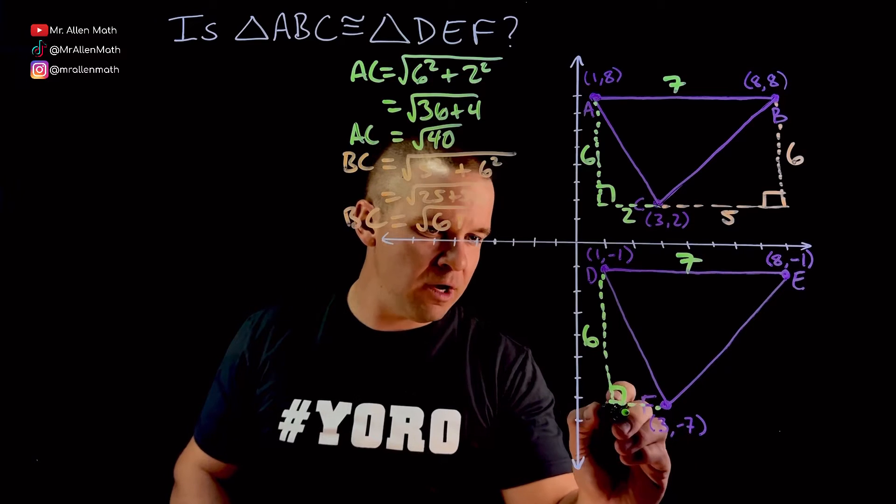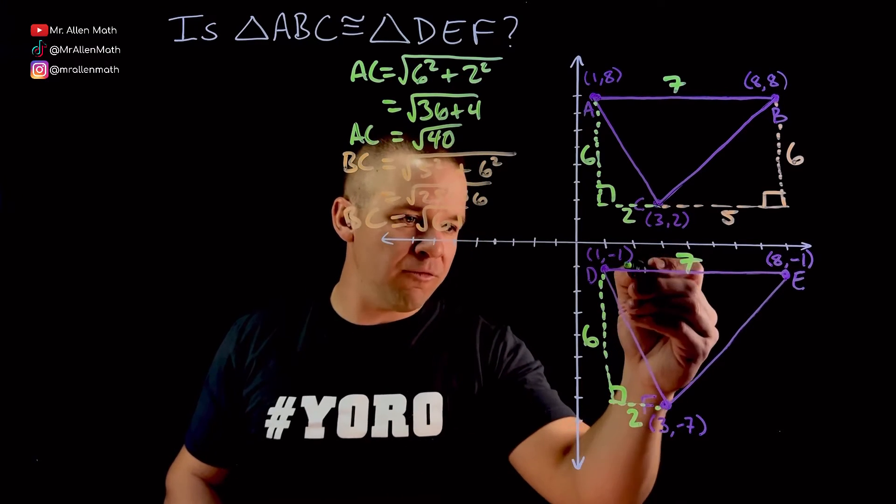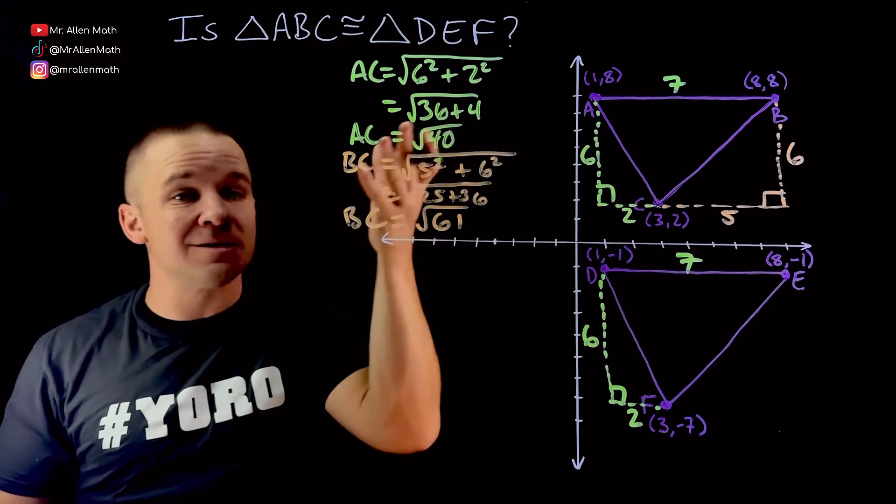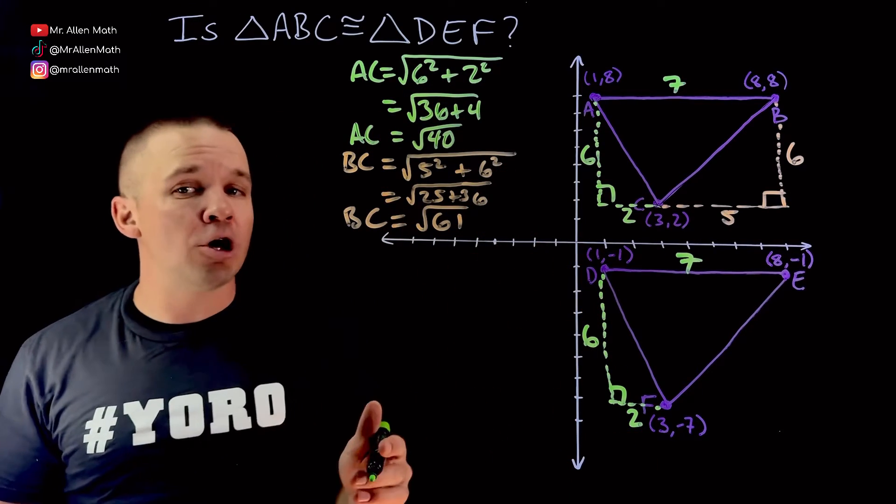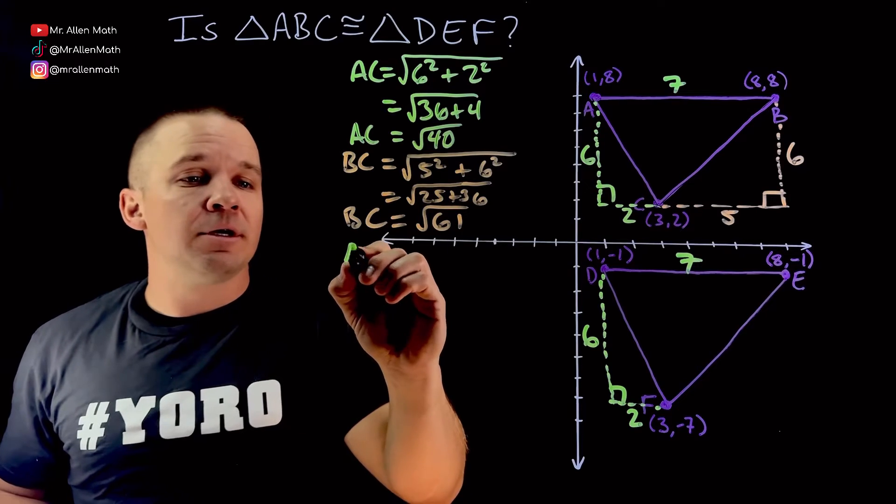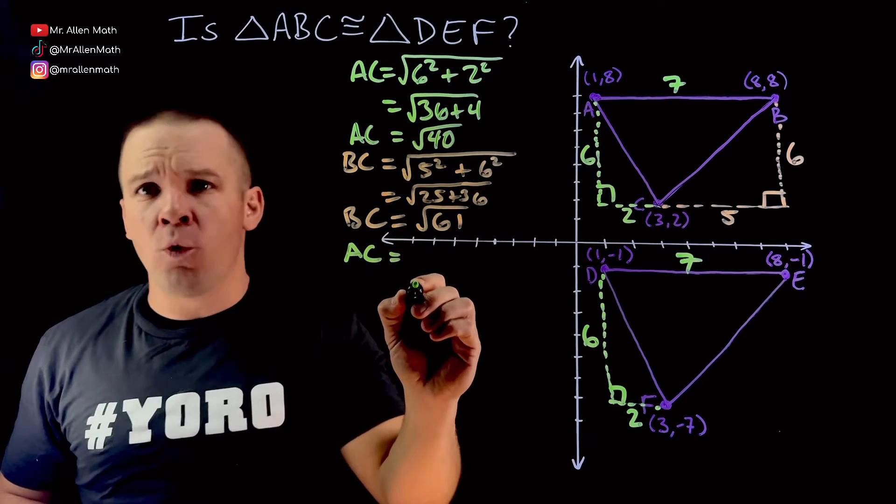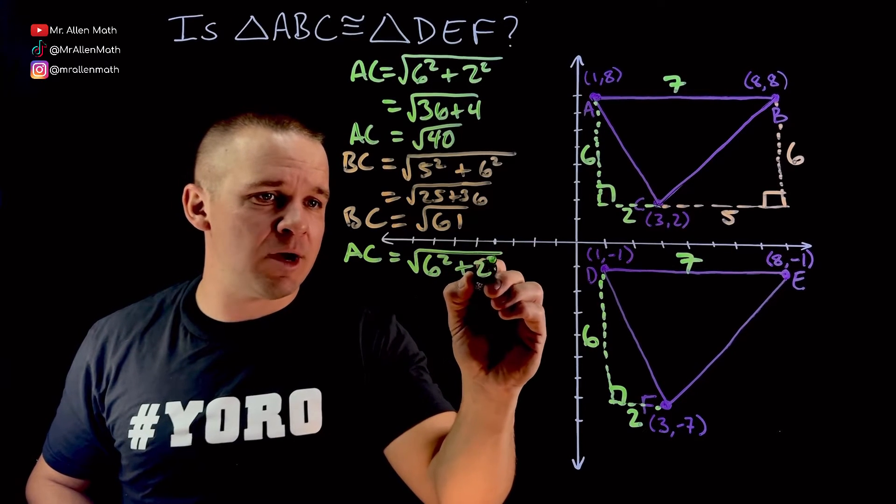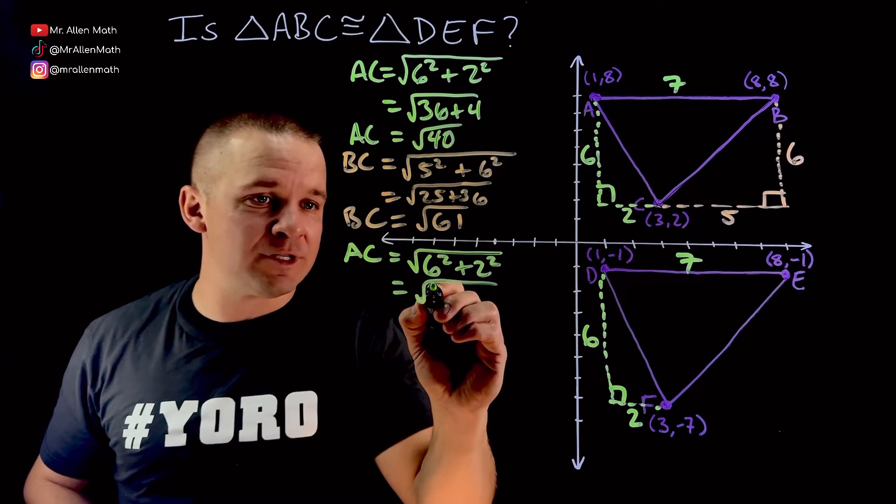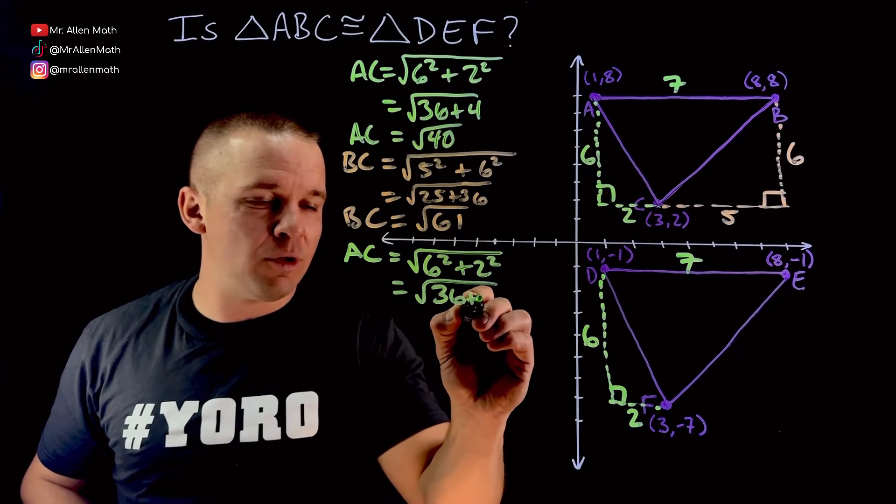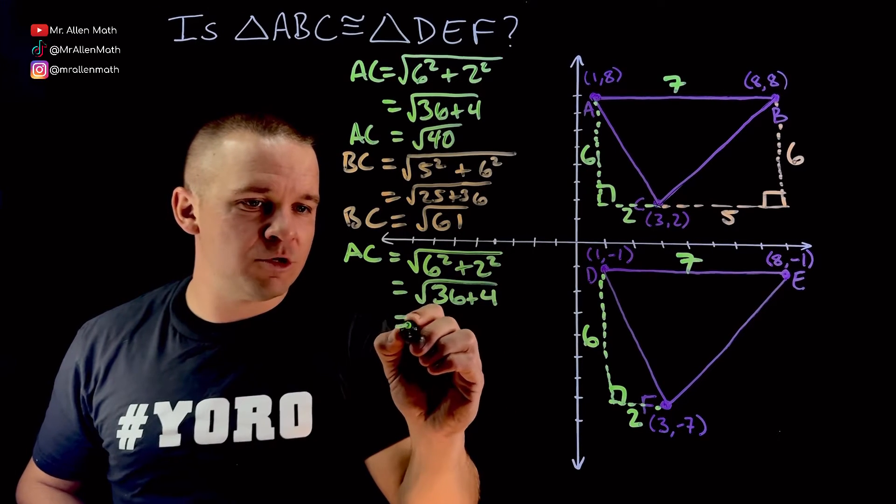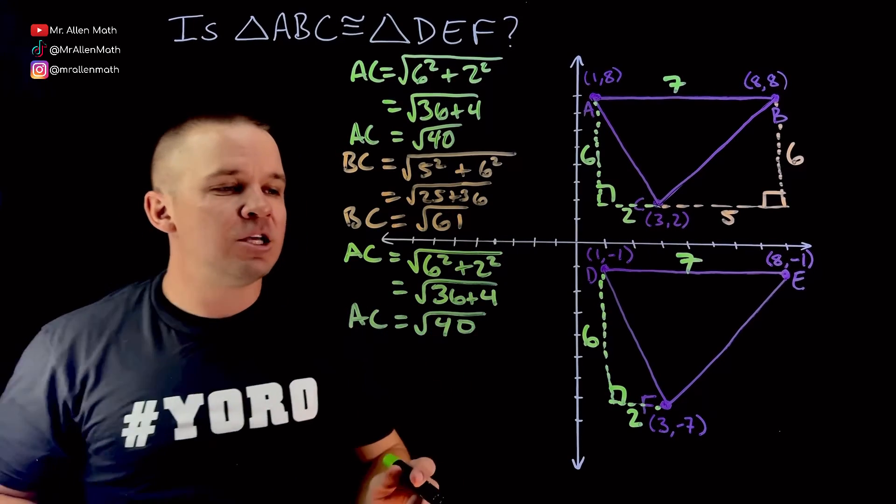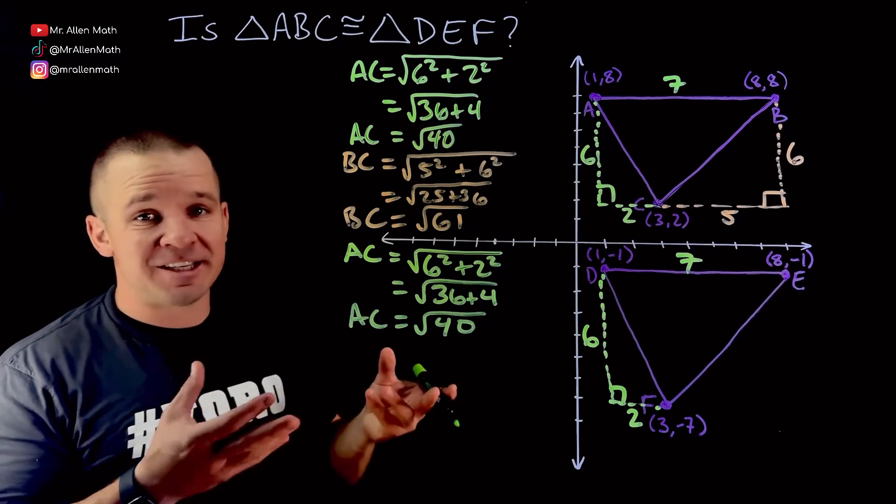Change from 1 to 3 in my x-coordinates is 2. From negative 1 to negative 7 is a drop of 6. Got our two sides. Oh my goodness, it is going to be the same. But let's show our work because this is math class and we always show our work. Shortcuts get you in trouble. 6 squared plus 2 squared gives me square root of 36 plus 4, which equals the square root of 40.